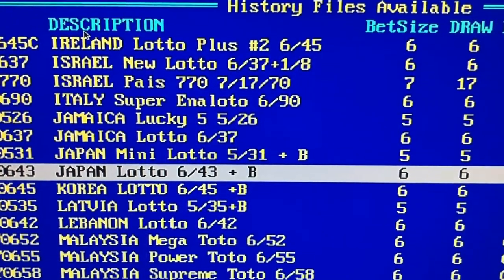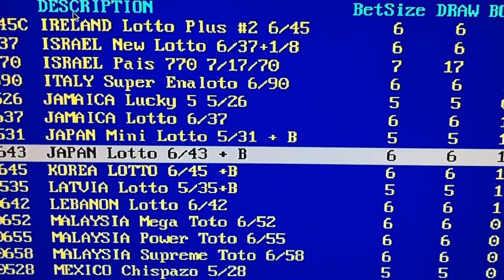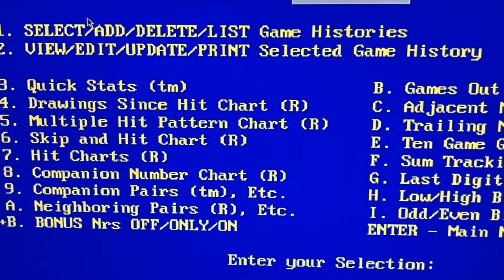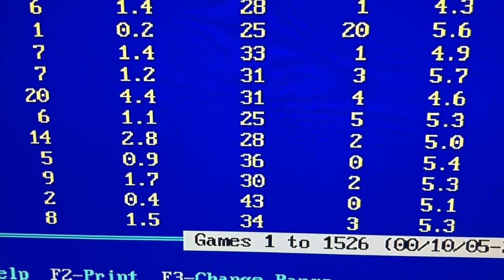Then it lists a whole bunch of lotteries. I want Japan lotto, so I'm going to enter that and select number three. Then I'm going to change the range, F3.